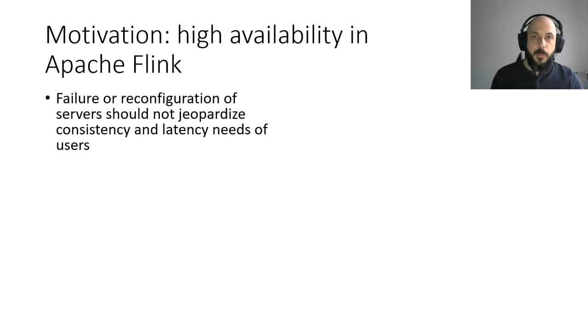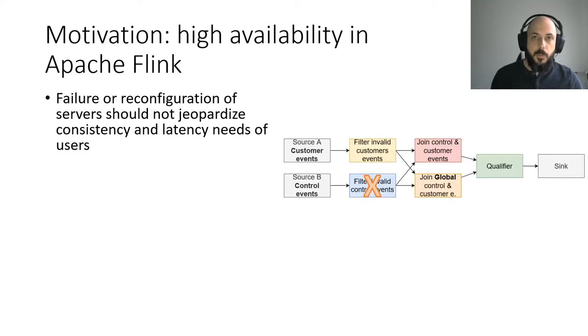We focus in this paper on the high availability of stream processing engines, more specifically the popular Apache Flink. In case of failure of a task execution node, the provider does not want to lose the customer's data and to minimize the potential effects on latency. If not addressed, the crash of a task will stop the whole job.